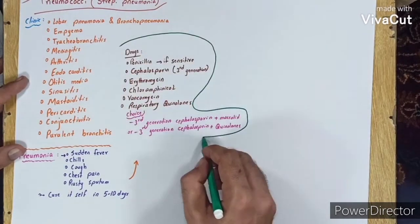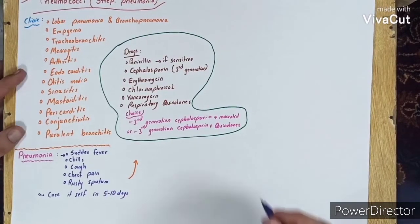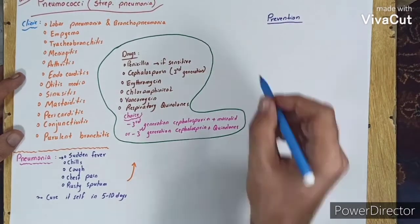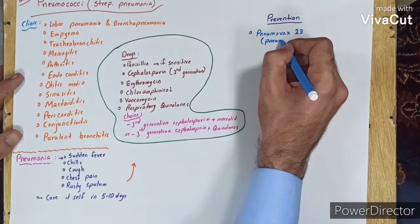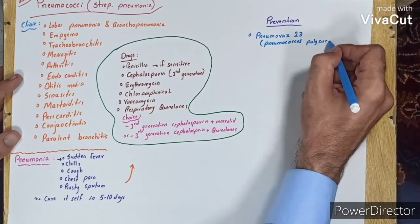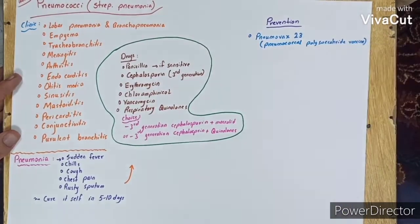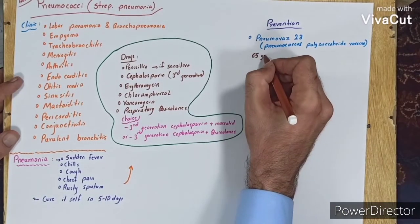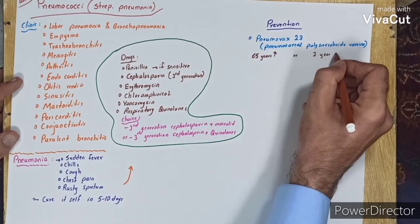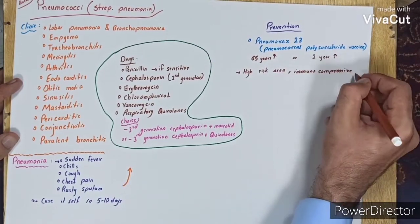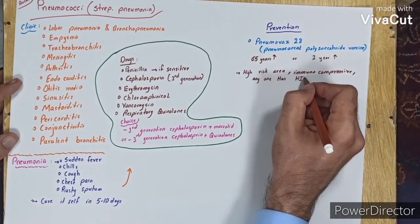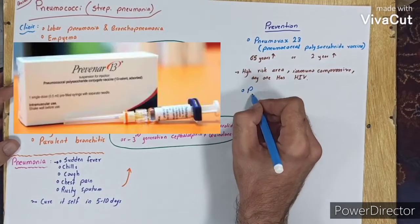For prevention, there are vaccines available. NemoVax 23, called pneumococcal polysaccharide vaccine, is for those greater than 65 years old or greater than 2 years old in high risk areas, immunocompromised patients, and anyone with HIV.